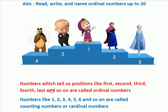Numbers which tell us positions — like 1st, 2nd, 3rd, 4th, last, and so on — are called ordinal numbers. Ordinal numbers tell us the positions.